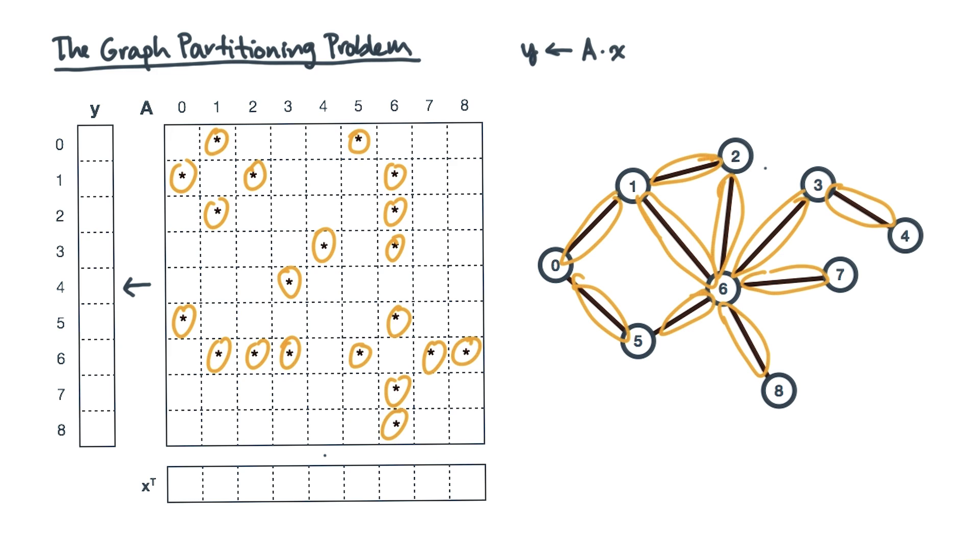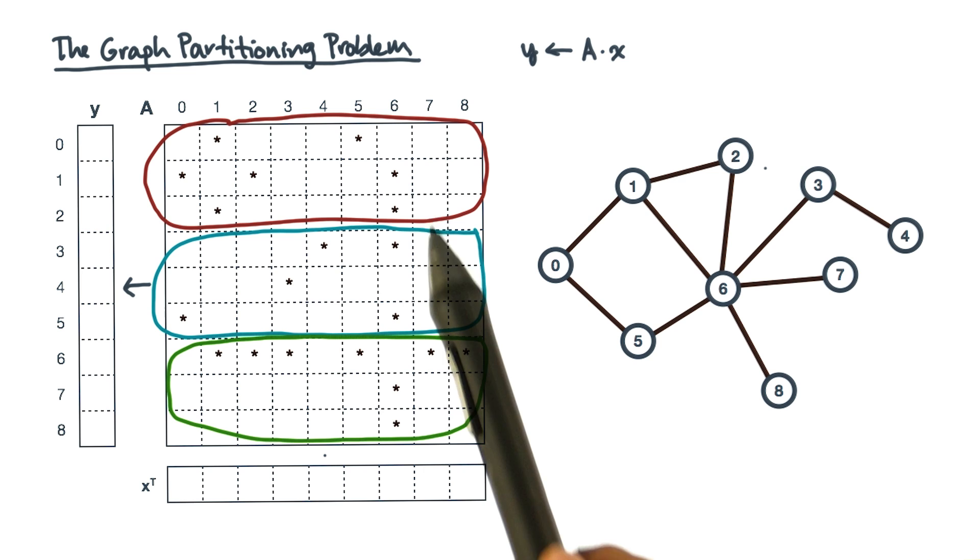One way to do a distributed breadth first search is to use a computational primitive that looks like this linear algebra operation. Now, suppose you decide to distribute the work by first dividing the matrix row wise. You would then assign block rows to processes.